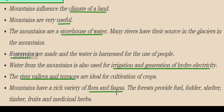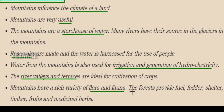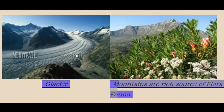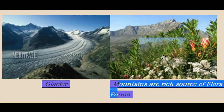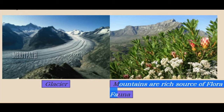Mountains also have a large variety of flora and fauna — that means plants, forests and animals. Forests are also a source of fuel. In this image you can see glaciers, which are ice caps over the mountains where water is present in frozen state. Mountains have a great variety of plants as well as animals.